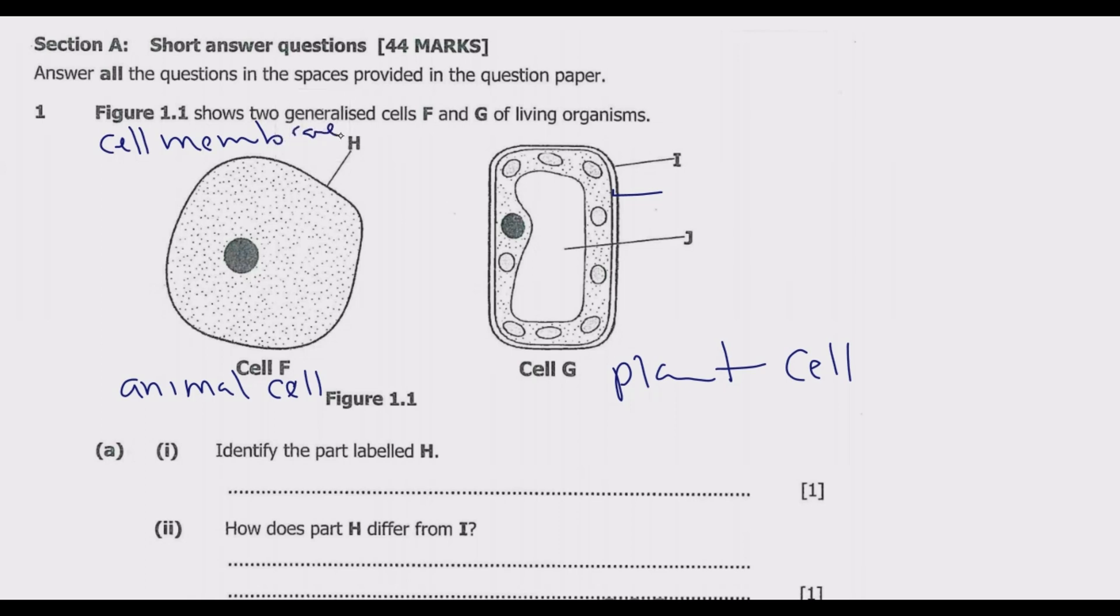That's the outer part of the animal cell. Then what is the inner part? This inner part is the nucleus. The nucleus is found in both animal cell and in plant cell. So this is also the nucleus.